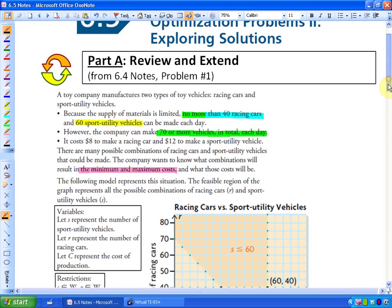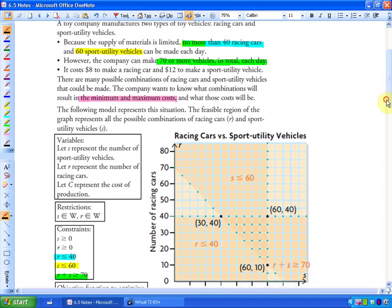So one thing that we did based on those constraints - no more than 40 racing cars, no more than 60 sport utility vehicles and 70 or more vehicles in a day - what we looked at in section 6.4 when we looked at this problem was how to come up with a solution region and this is it here. This region here represents all the possible combinations where there's no more than 40 racing cars, no more than 60 sport utility vehicles and at least 70 cars. So those would be all the possible combinations.